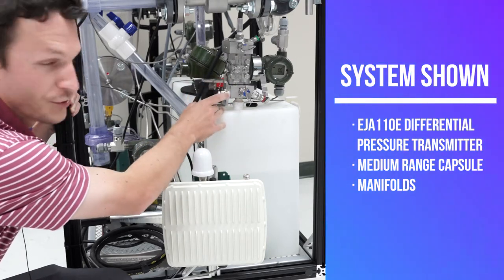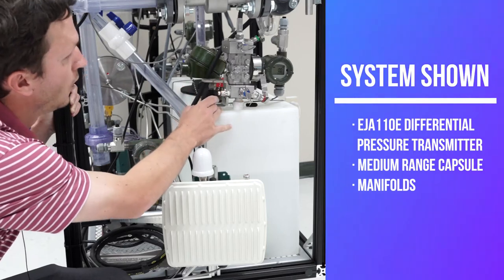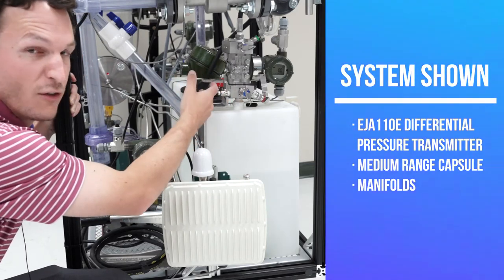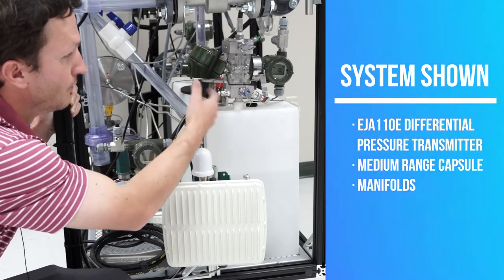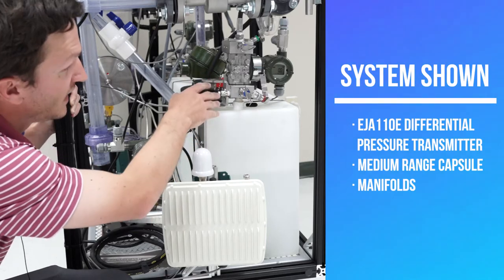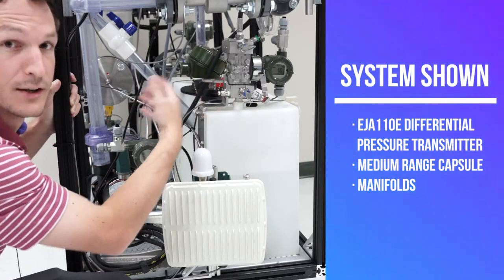We can charge one side of the transmitter, the low side, with high pressure to simulate an overpressure incident, and then I can vent it and bring it back to a steady state where it is right now, creating zero differential pressure.